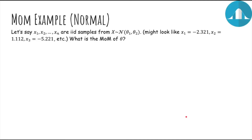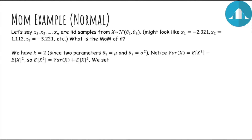What about the normal distribution? If x1 through xn are iid samples from a normal distribution, there are two parameters: theta 1 is the mean and theta 2 is the variance. So we need two equations. Notice that the variance of x equals the expected value of x squared minus E of x quantity squared. Solving for E of x squared — the second moment of x — that's just the variance of x plus the mean squared. Let's write down our equations.